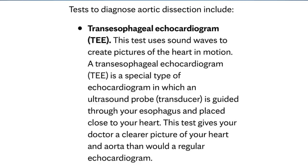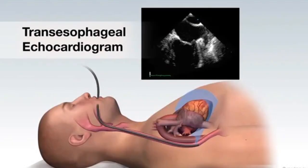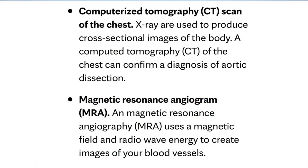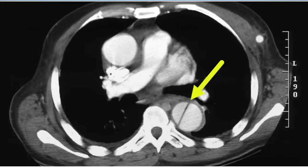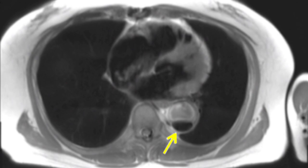An echocardiogram is an exam where you put a transducer on your chest and look at the structures of the heart. It's somewhat helpful to diagnose this condition, but not necessarily the best way — it depends on what you have access to. A trans-esophageal echo, going through your mouth closer to the heart via the esophagus, is preferred. Other diagnostic options that may be better include a CT scan or an MRA — an MRI-type test focused on blood vessels. A CT scan can show the false and true lumen, and an MRA gives you a visual of what's going on inside your aorta.